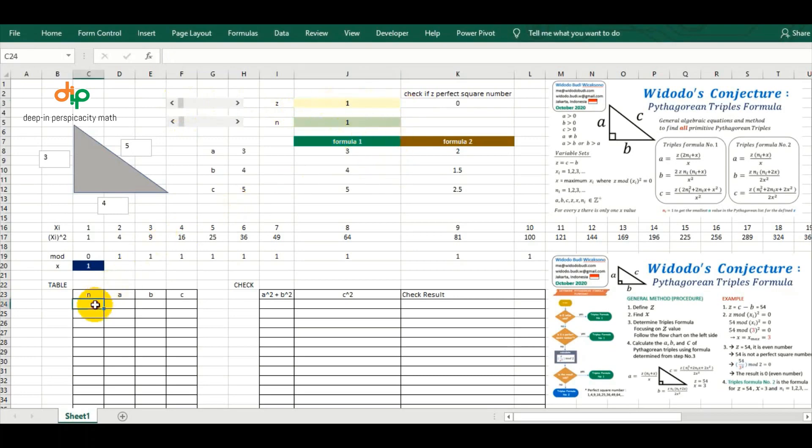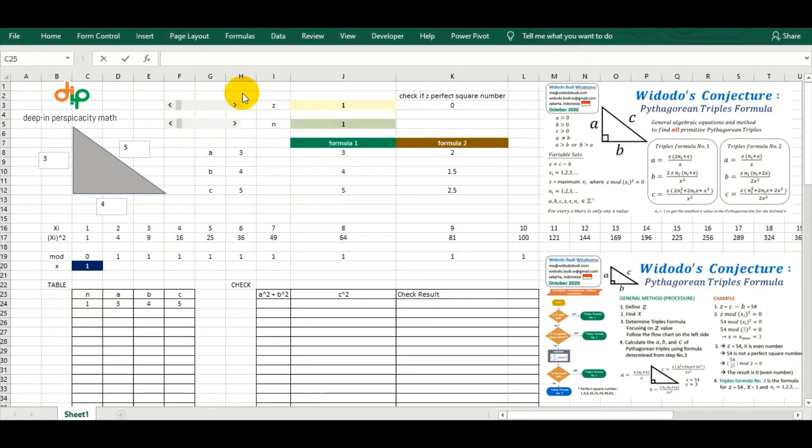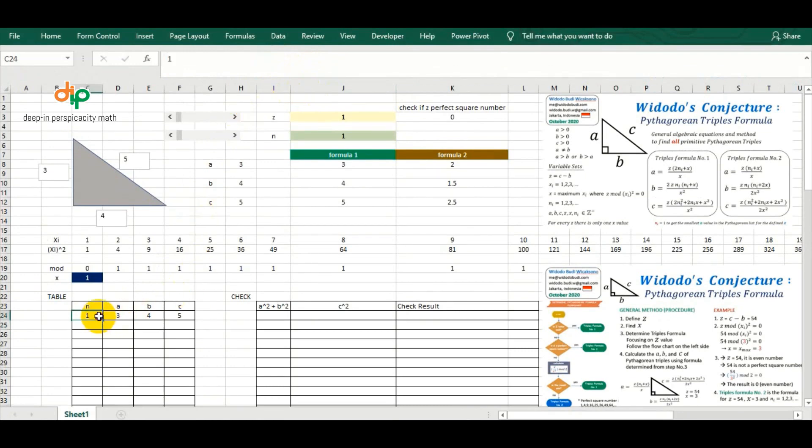Now, we distribute N values into the table, then we can verify all Pythagorean triples for every N value.